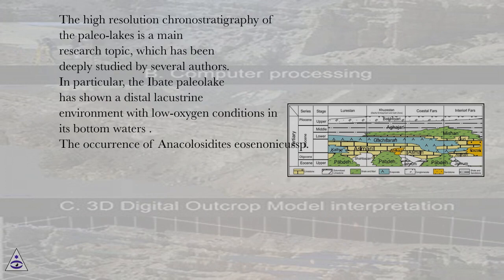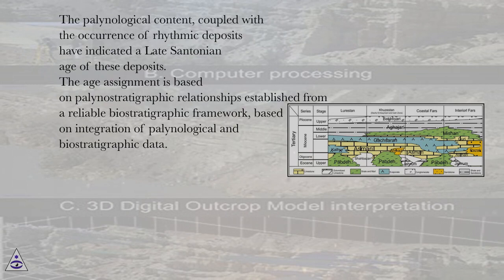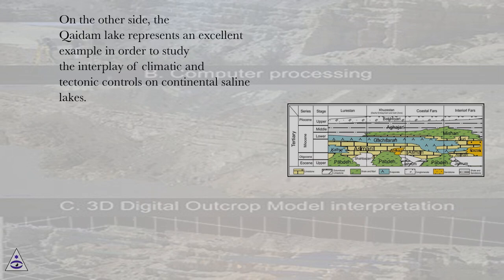The high-resolution chronostratigraphy of Paleo lakes is a main research topic that has been deeply studied by several authors. In particular, the Ibatae Paleolake has shown a distal lacustrine environment with low oxygen conditions in its bottom waters. The occurrence of Anacolosidites eosinonychus sp. nov., combined with the lack of Stereisporites nativitensis, indicates a late Cenomanian age for the Paleolake, ca. 84 Ma. This age is constrained by the occurrence of carbonized sclerotes associated with the great Cenomanian wildfire recorded in coeval marine offshore strata of the Campos and Santos basins. The palynological content coupled with rhythmic deposits has indicated a late Cenomanian age. The age assignment is based on palynostratigraphic relationships established from a reliable biostratigraphic framework integrating palynological and biostratigraphic data. The Kaidan Lake represents an excellent example to study the interplay of climatic and tectonic controls on continental saline lakes.